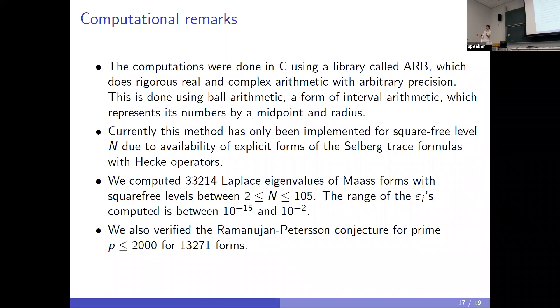With this, because we also get rigorous error bounds on the Fourier coefficients, we're able to verify the Ramanujan-Petersson conjecture for 13,000 of the forms at primes up to less than 2,000. The Ramanujan-Petersson conjecture for Maass forms is still an open problem. It basically says that these a_p, the Fourier coefficients at primes, should be less than two in absolute value. We're able to verify this for high level forms because we get rigorous error bounds.